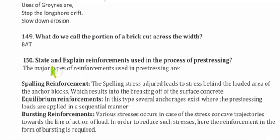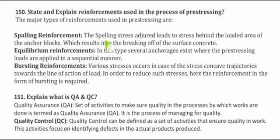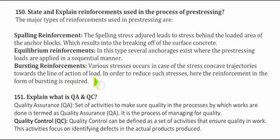Question 150: State and explain the reinforcements used in pre-stressing. The major types are: Spalling reinforcement — stress endured in a layer behind the loaded area of anchor blocks, resulting in breaking of the surface concrete. Equilibrium reinforcement — several anchors exist where pre-stressing loads are applied sequentially. Bursting reinforcement — stresses occur in cases of concave trajectories towards the line of action of load; reinforcement in the form of bursting is required to reduce such stresses.